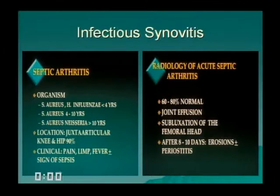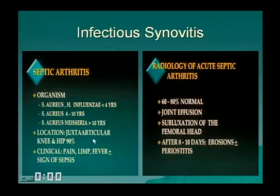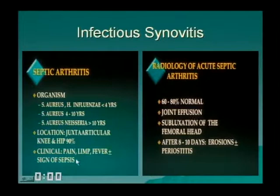The age of Neisseria infection is getting younger due to significant cultural changes. This is usually juxta-articular, occurring in the knee and hip about 90% of the time. Clinical features include pain, lymphadenopathy, fever, and plus or minus signs of sepsis.